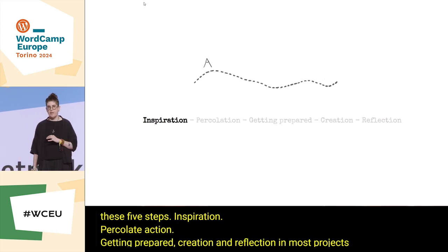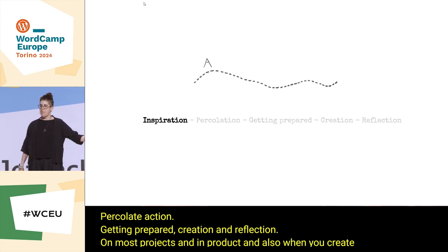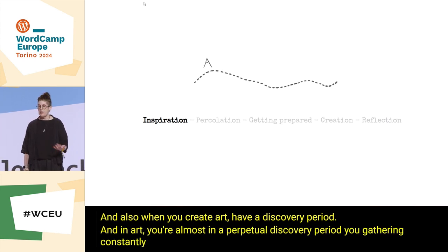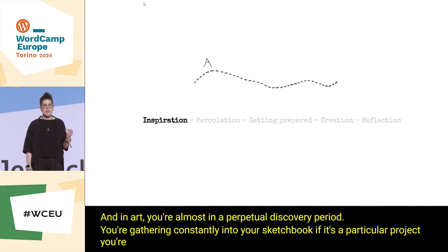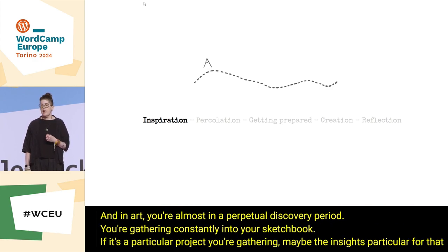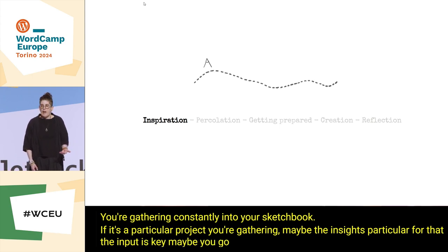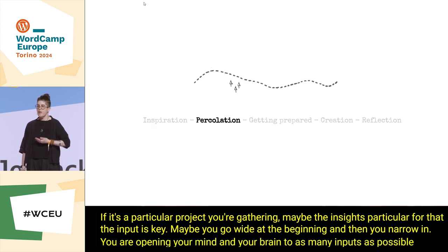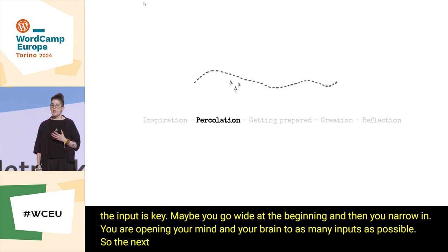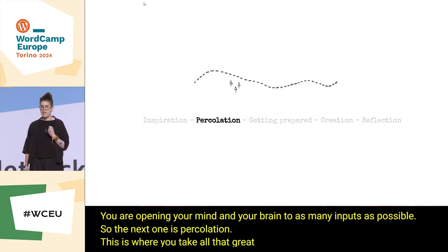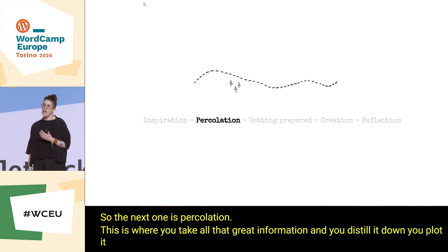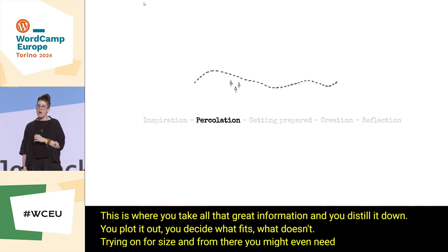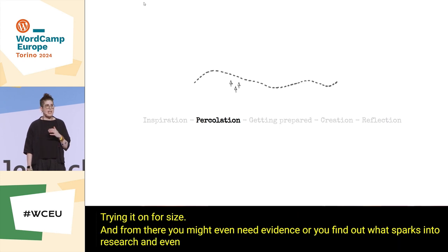Most projects in product, and also when you create art, have a discovery period. In art, you're almost in a perpetual discovery period — you're gathering constantly into your sketchbook. If it's a particular project, you're gathering insights particular to that. The input is key. Maybe you go wide at the beginning and then you narrow in, opening your mind and your brain to as many inputs as possible. The next step is percolation — this is where you take all that great information and you distill it down, plot it out, decide what fits and what doesn't.